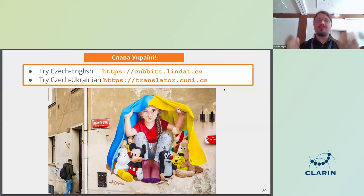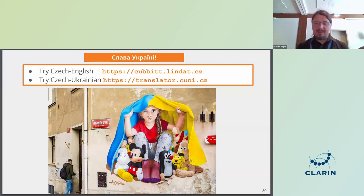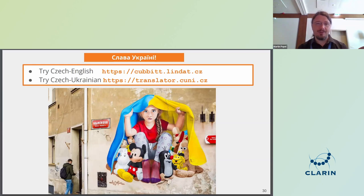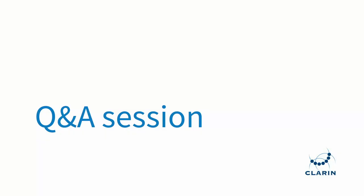Finally, here are the addresses where you can try these translators. The first has English and other languages as well; the second is currently only for Ukrainian and Czech. My personal opinion: I was talking about helping Ukrainian refugees, but my view is that it's not that we are helping Ukraine — Ukraine is helping all of Europe. Maybe this is best illustrated by a photo from one of the streets of Prague. Thank you for your attention.